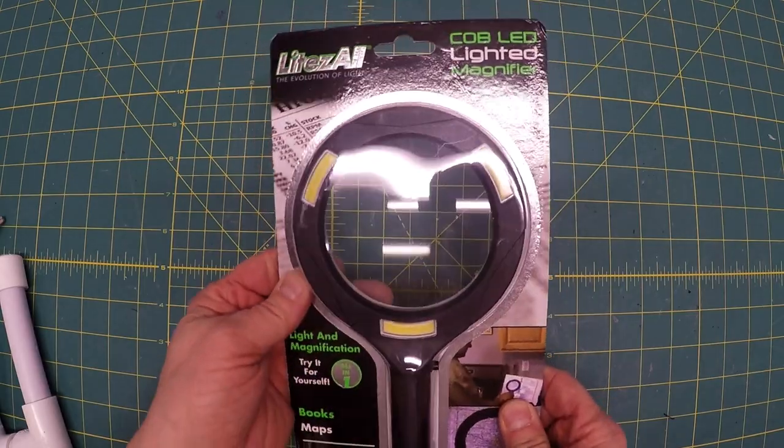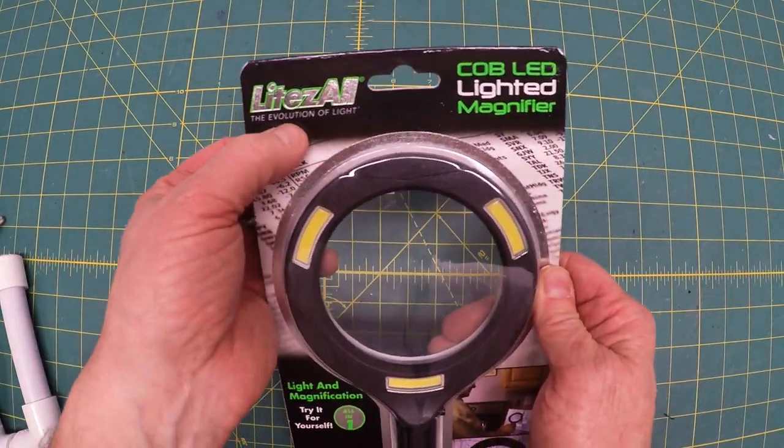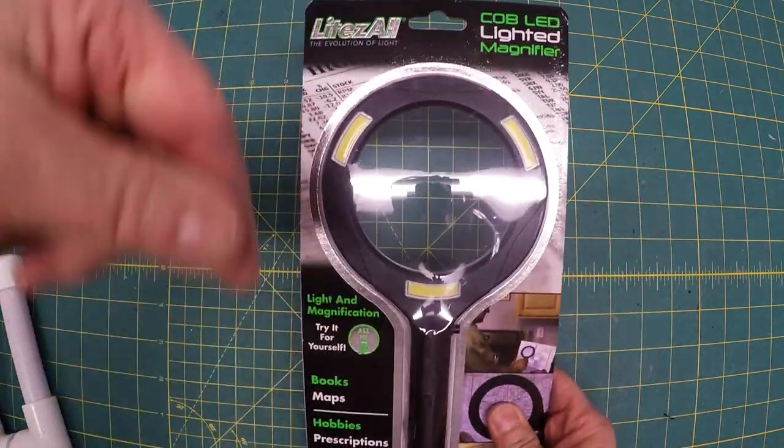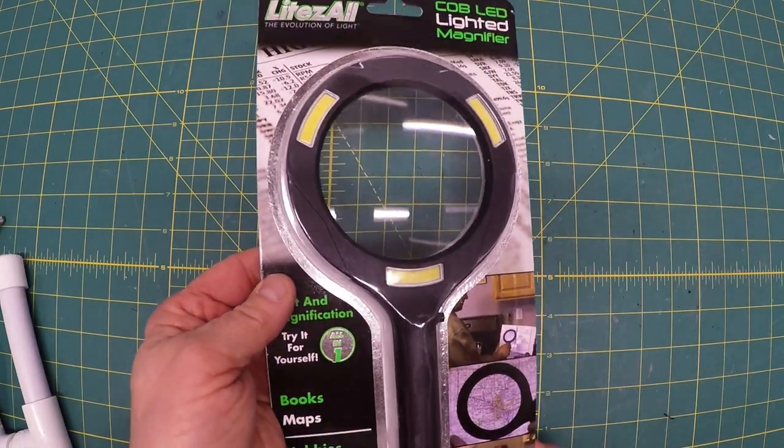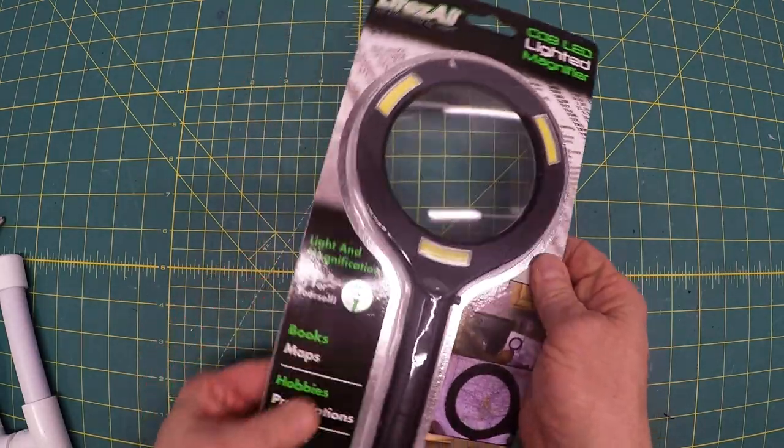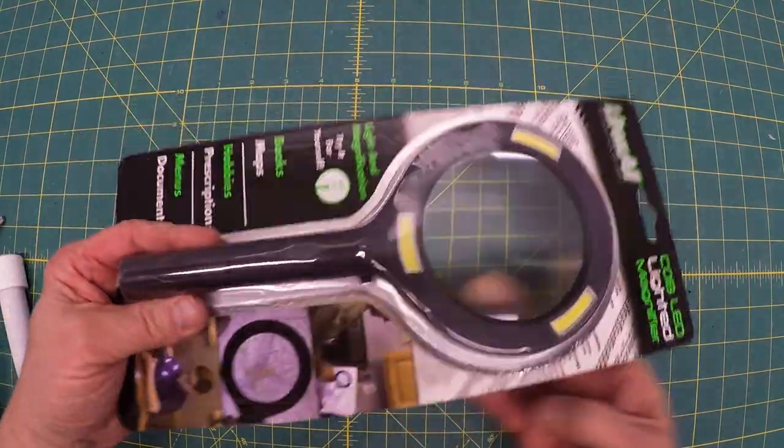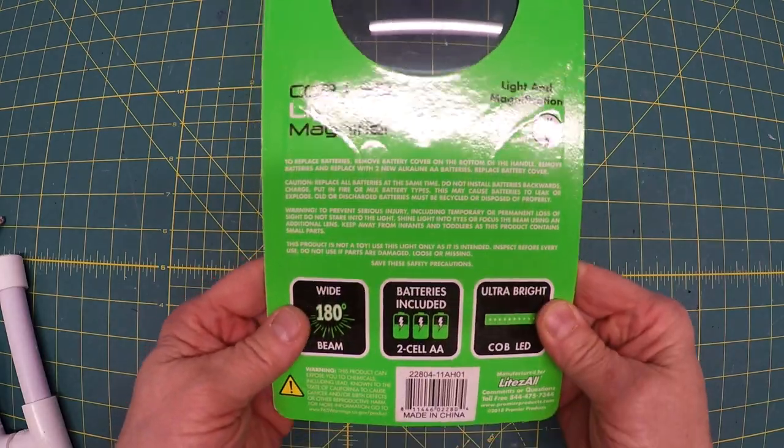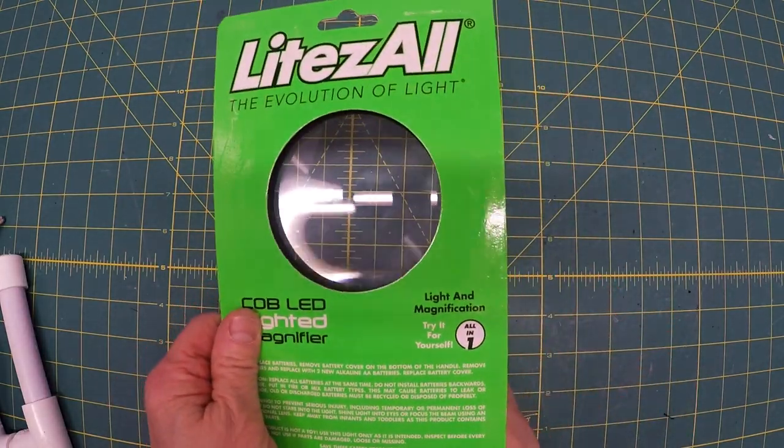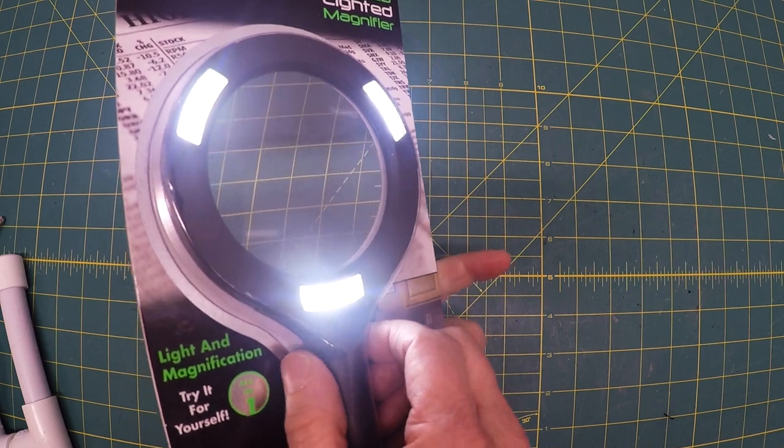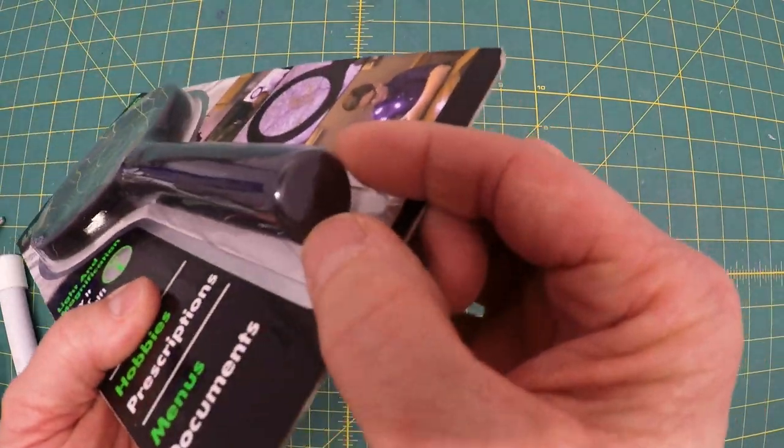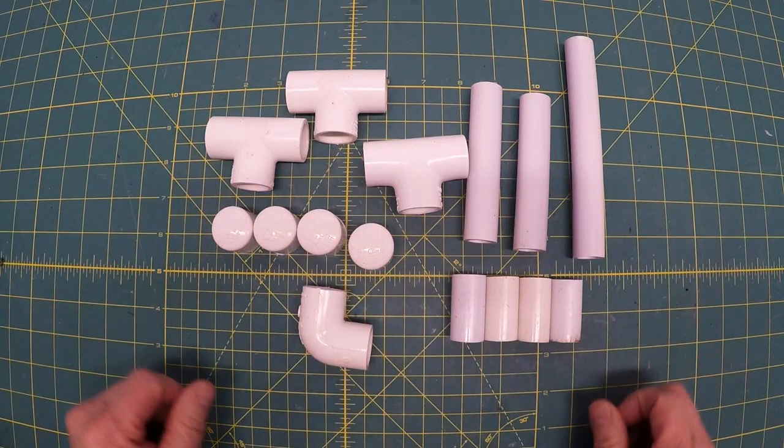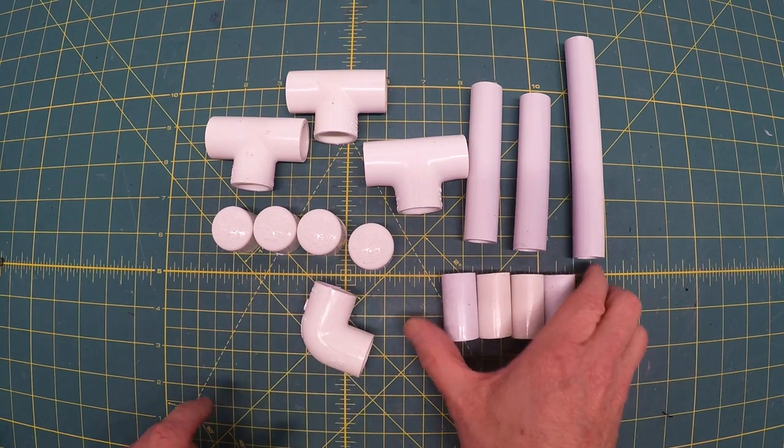The key feature of this build is this LightAll Evolution of Light COB LED lighted magnifier. I'll post a link down below. You can get it at Amazon. I got this at Walmart for under six dollars. There's the other side. The great thing about this? Those LEDs that brighten up everything. And it fits into a half-inch coupler perfectly. This is all half-inch PVC, PVC couplers, PVC pipe.